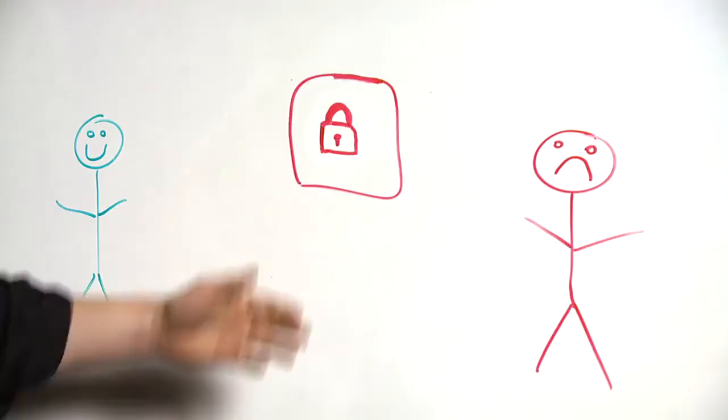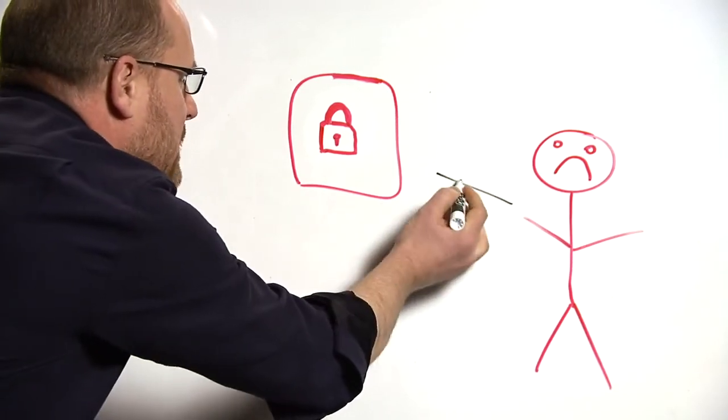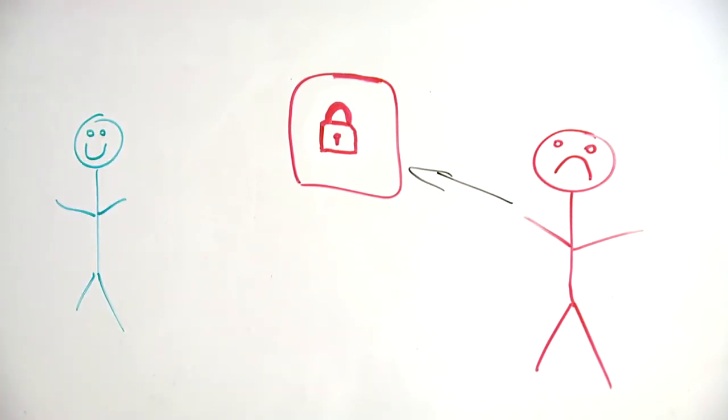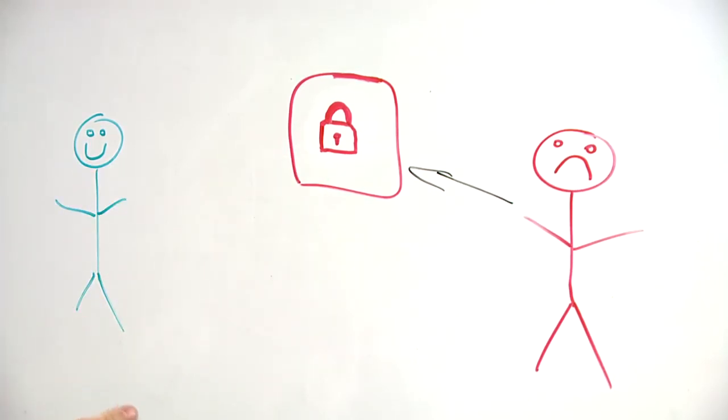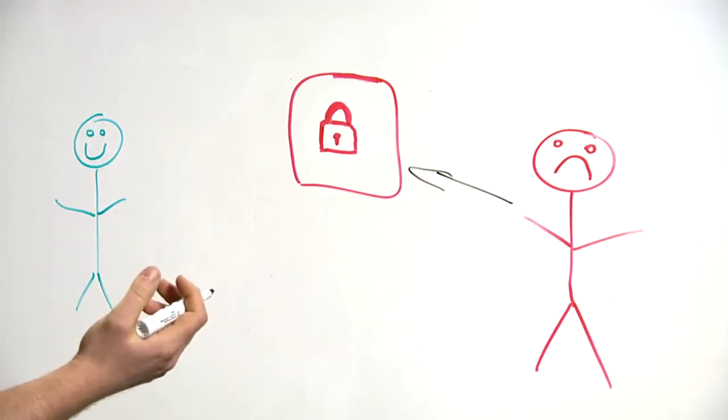All right. And the thing that allows them to do that is something called Lockbox. The grumpy engineer makes a request, explicit request, to elevate his privileges for the operation that he needs to do. Lockbox then checks whether or not the scope of his role allows him to actually get that elevated privilege.